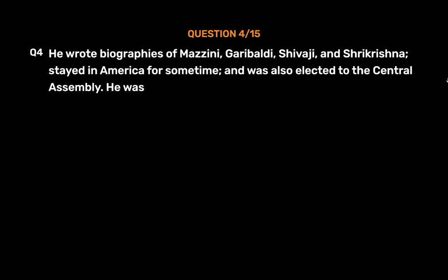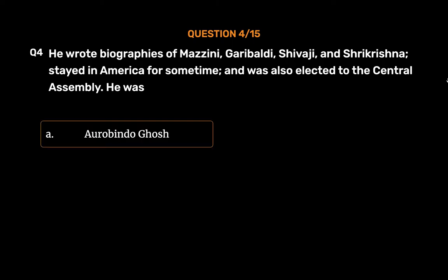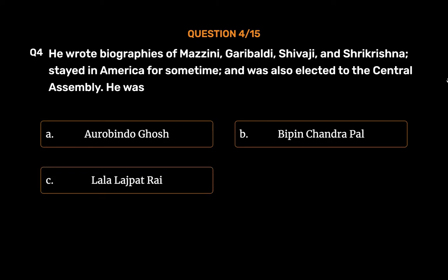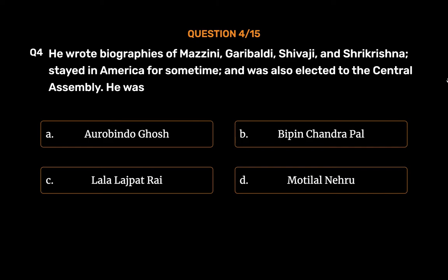Question No. 4. He wrote biographies of Mazzini, Garibaldi, Shivaji, and Sri Krishna, stayed in America for some time, and was also elected to the Central Assembly. He was Lala Lajpat Rai. The correct answer is Option C: Lala Lajpat Rai.